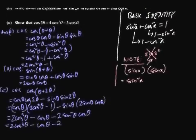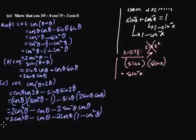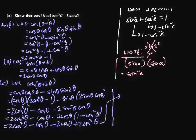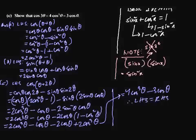Substituting sine squared theta equals 1 minus cos squared theta: we get 2 cos cubed theta minus cos theta minus 2 cos theta times (1 minus cos squared theta). Expanding: minus 2 cos theta times 1 is minus 2 cos theta, and minus 2 cos theta times minus cos squared theta is plus 2 cos cubed theta. The final line: 2 cos cubed theta plus 2 cos cubed theta equals 4 cos cubed theta, and minus cos theta minus 2 cos theta equals minus 3 cos theta. Therefore the left-hand side equals the right-hand side: cos 3 theta equals 4 cos cubed theta minus 3 cos theta. Proved.